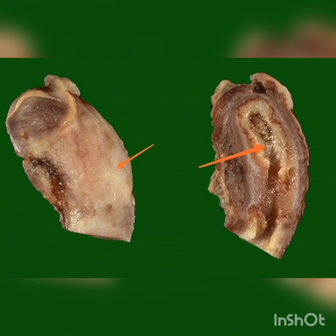Now I will be explaining about the cut surface of the appendix. Here you are seeing a picture of the cut surface of the inflamed appendix. On the left side you are seeing the serosal aspect with yellow tan exudates, and on the right side the arrow is showing the lumen which is filled with yellow tan exudates with a hyperemic border.